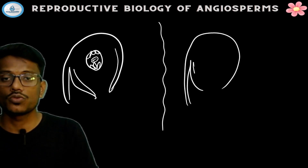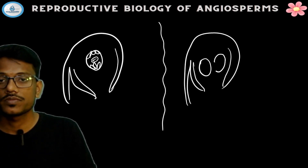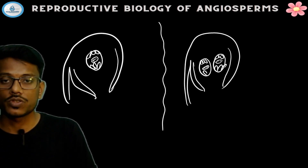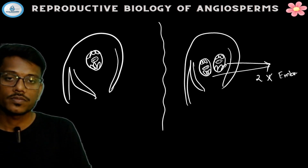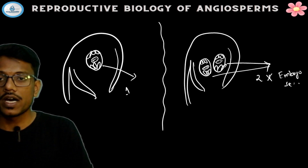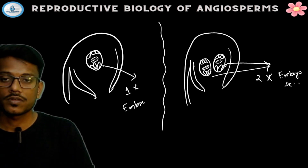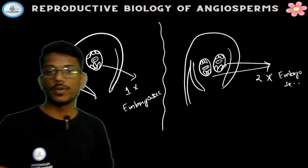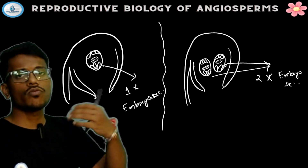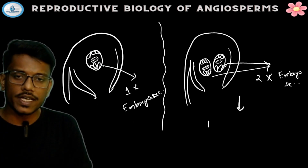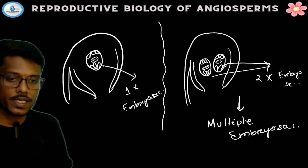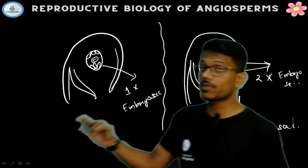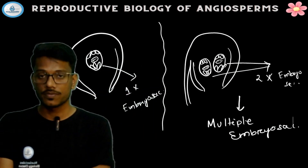So these are the embryo sacs. Here, where there is more than one archesporial initial cell, there is formation of more than one embryo sac. This is called multiple embryo sac. This is generally not seen but is seen in some cases like Casuarina, Rosaceae family, and Ranunculaceae family.